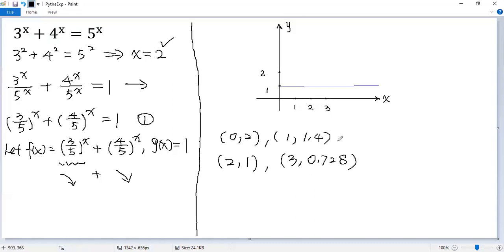Let's plot these points. So when x equals 0, y equals 2. When x equals 1, y equals 1.4. When x equals 2, y equals 1. When x equals 3, y equals 0.728, somewhere around here.